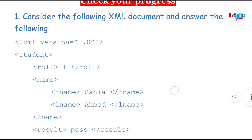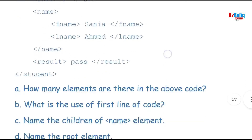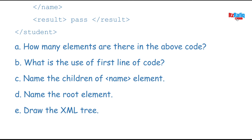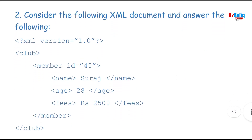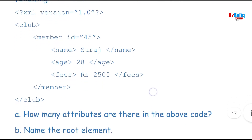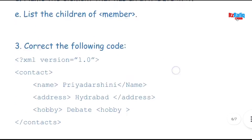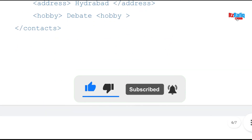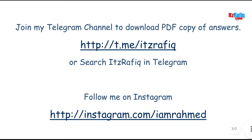Now I have some questions for you to solve yourself. You can send your answers to my email or WhatsApp number. The questions include: observing an XML code and answering how many elements are there, what is the use of the first line, name the children of name, name the root element, and draw the XML tree. In question two, observe another XML document and answer about attributes, root element, parent relationships, etc. In question three, there is XML code with mistakes that you need to correct. That's all for today — see you in a new video, take care and bye.